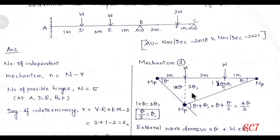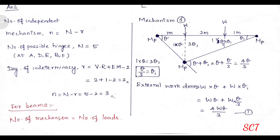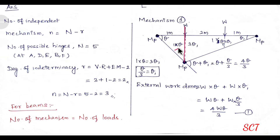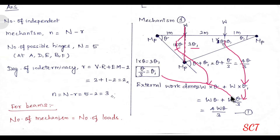The drawing is now clear. All procedures are set. First, external work done — load into distance. W is the load, so external work done equals W into theta, plus W into theta1 (which is theta/3). That gives 3W theta plus W theta divided by 3, adding to 4W theta divided by 3.